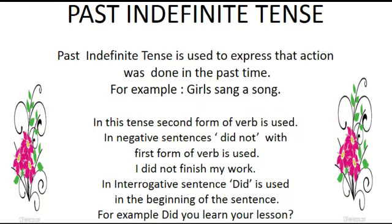Past Indefinite Tense. Dear students, today we are going to start our topic: Past Indefinite Tense. First of all, we are going to see what Past Indefinite Tense is. It is used to express an action that was done in the past time. For example: 'Girl sang a song.'